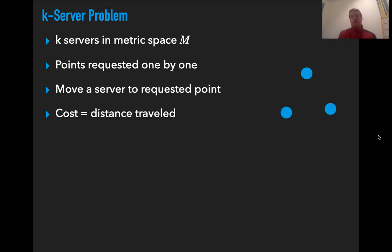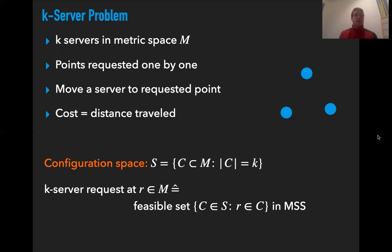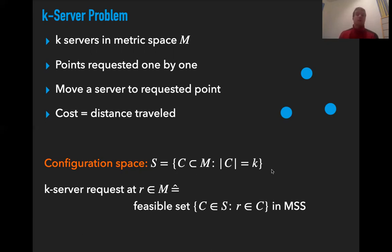At first sight it may not be obvious why this falls into the MSS framework, because we have k servers and not just one, and moreover the requests are single points rather than sets. But the reason is that if we look at the configuration space instead of the metric space M, the configuration space contains all sets of size k corresponding to server configurations — the locations of the k servers. We can then model a k-server request at point r by the feasible set containing all configurations that include point r. This configuration space itself is also a metric space; the metric on M induces a metric on the configuration space.